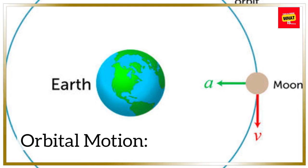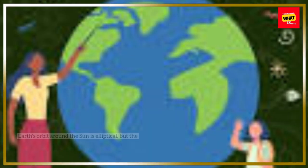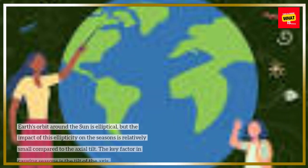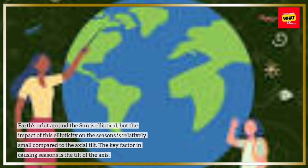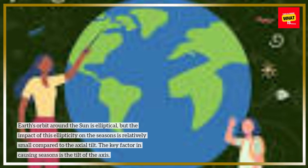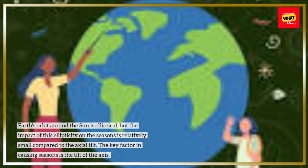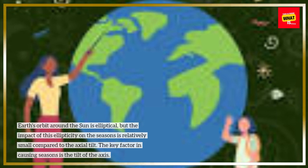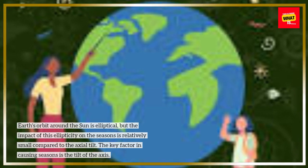Orbital Motion. Earth's orbit around the Sun is elliptical, but the impact of this ellipticity on the seasons is relatively small compared to the axial tilt. The key factor in causing seasons is the tilt of the axis.